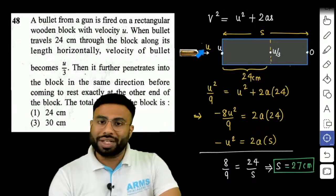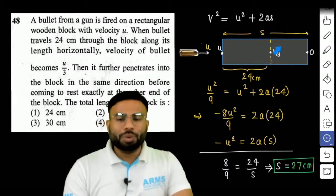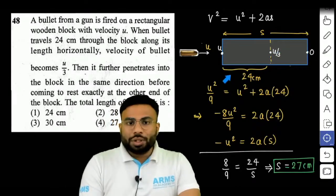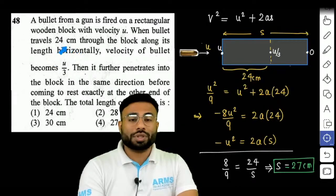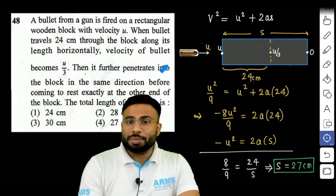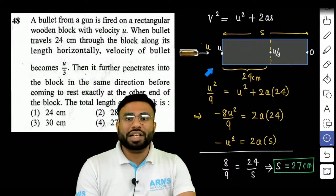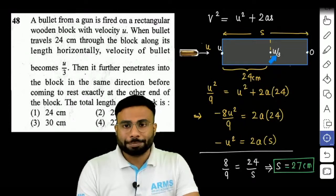जो initially U-speed से जा रहा था तो इस block के साथ उसका collision हुआ and after 20 cm when the bullet travels 24 cm through the block the velocity of bullet becomes, मतलब यहां पे आक 24 cm कवर करने के बाद velocity हो गया bullet का U by 3